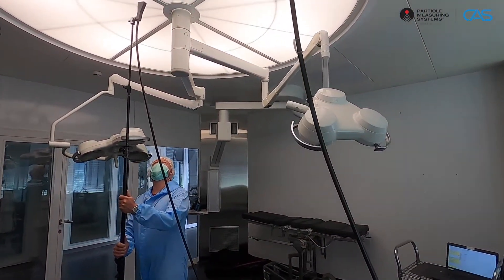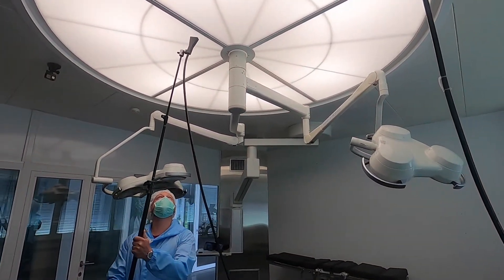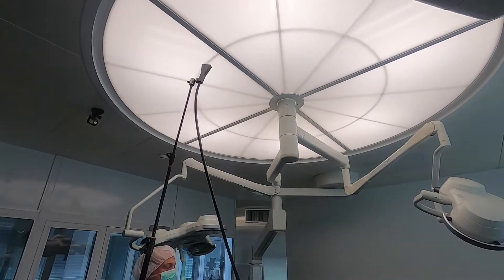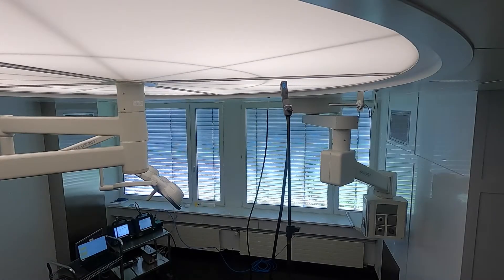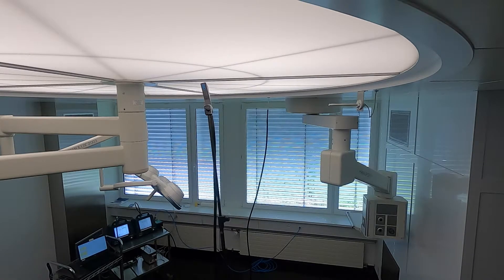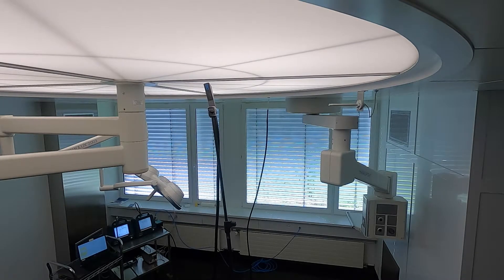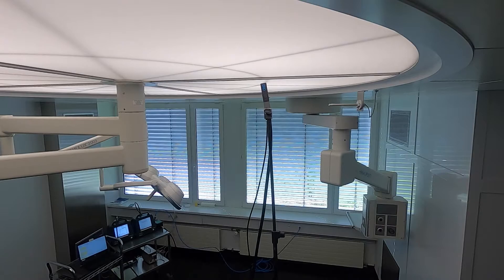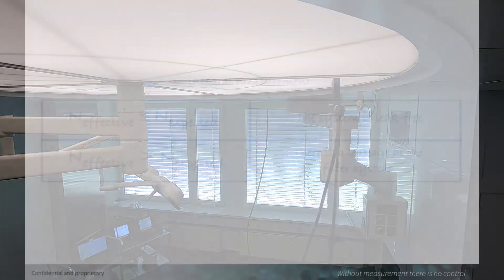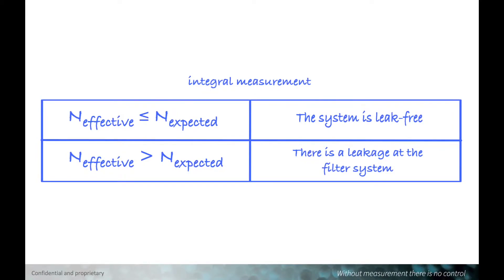In order to increase the quality of the measurement, the surfaces to be measured should also be scanned with the probe using the integral measurement method. Even with integral measurements, the expected number of particles is determined by means of complex calculations depending on the raw air and filter class. The evaluation is carried out by comparing the effective number of particles with the expected number. If the effective number is less than or equal to the expected number, the system is leak-free. If the effective number exceeds the expected number, there is a leak in the filter system.